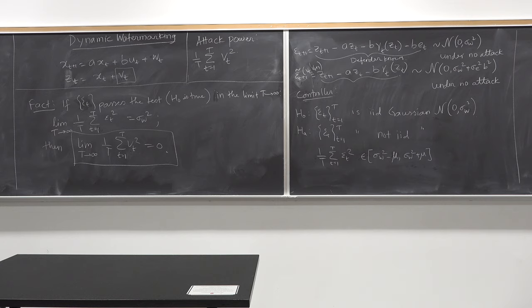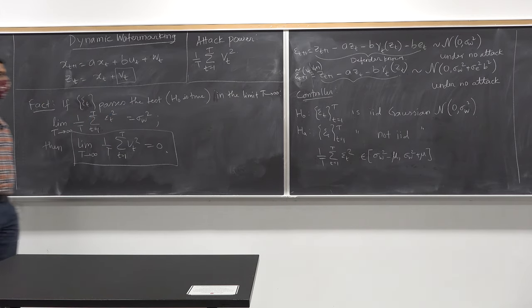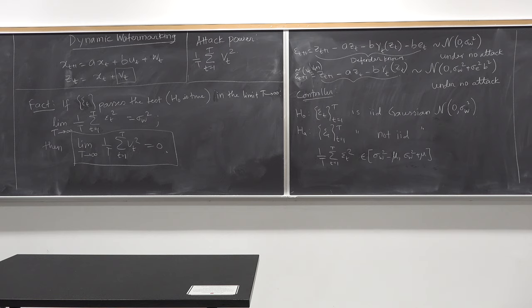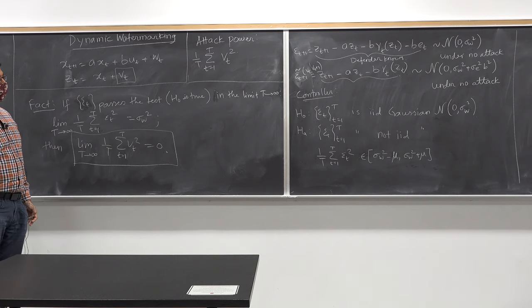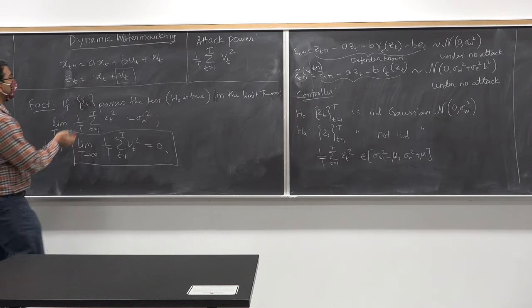Now we are going to extend this to a vector system with far more complicated dynamics and partial observation, and then we will come up with the dynamic watermarking scheme for that setting. It's going to involve a lot of mathematical equations, but the idea is exactly the same as the scalar case.